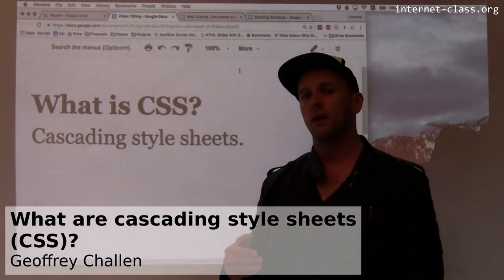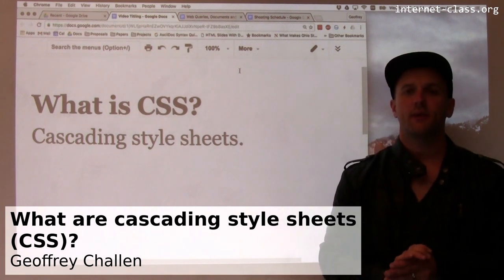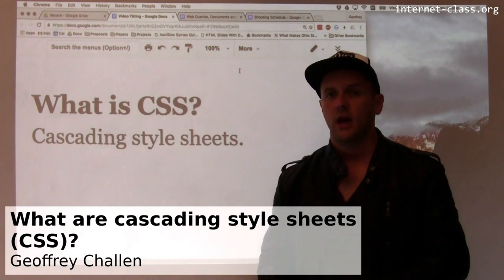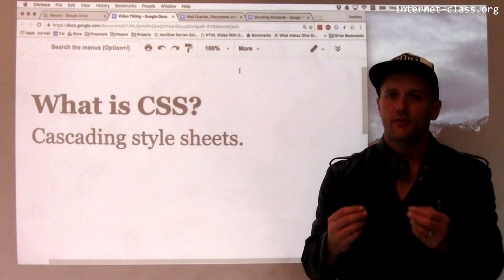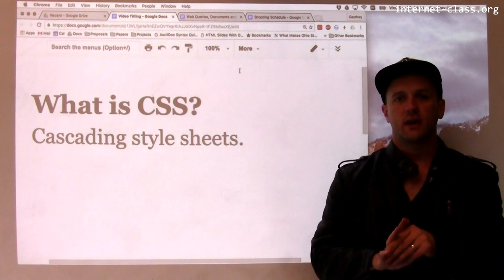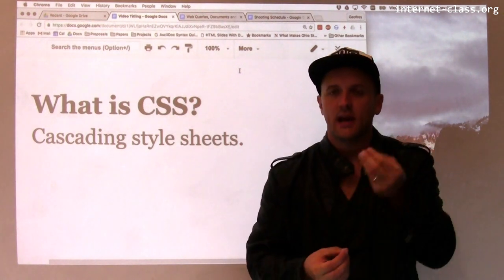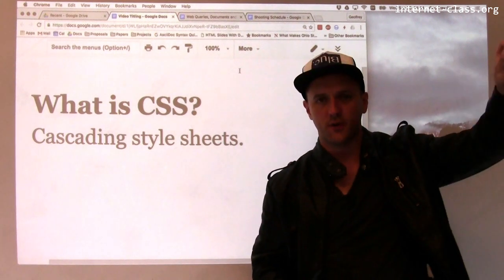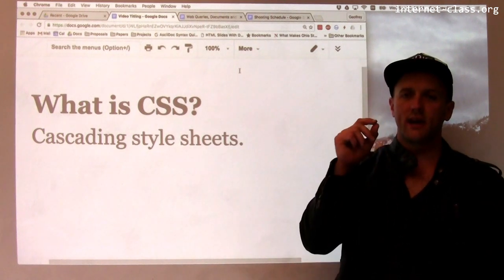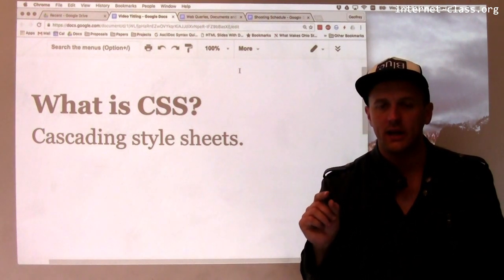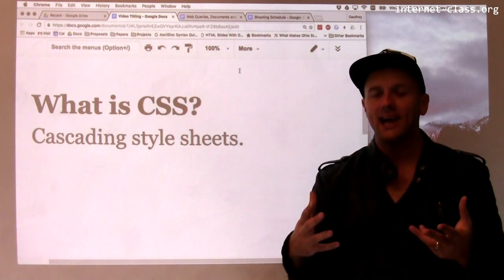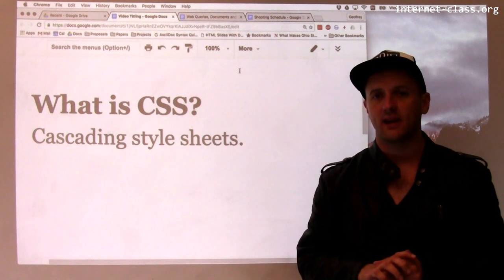The second really important part of modern web pages is something called CSS. CSS stands for cascading style sheets, and whereas the HTML is really intended to provide structure. The HTML answers questions like what text belongs together, what text is important, what text should go first, what text should go second, things like that. The cascading style sheets are designed to answer the question: how should things look? And there's really no aspect of how web pages are rendered that you can't somehow adjust using cascading style sheets.